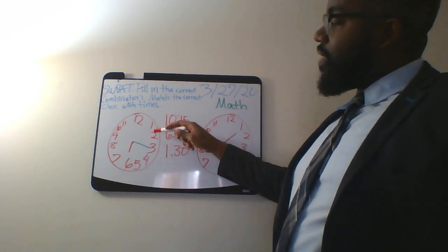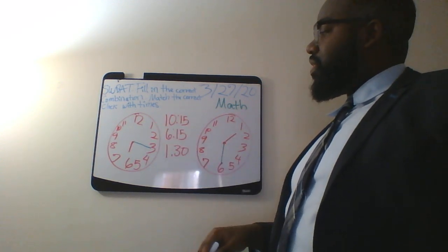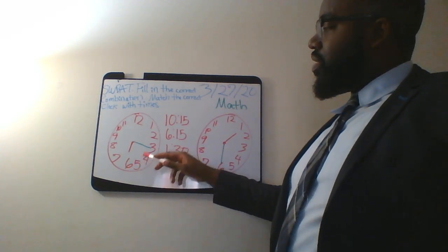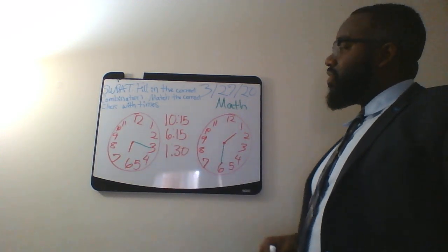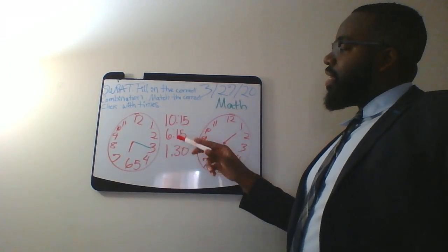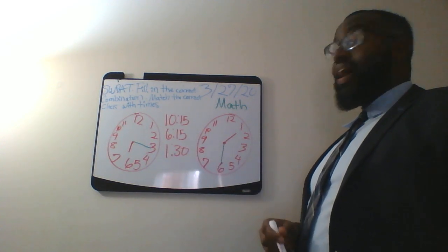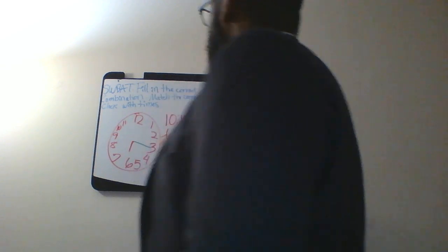Let's count. 5, 10, 15. So 6:15. Did we see a 6:15 on the board? We have 10:15, 6:15, and 1:30. Ah, we do have a 6:15. So we draw the line here to that clock.